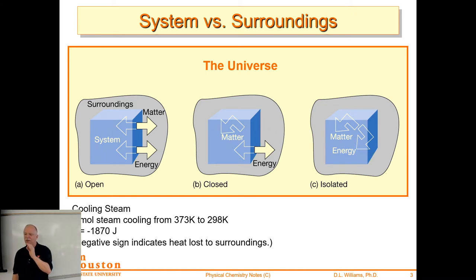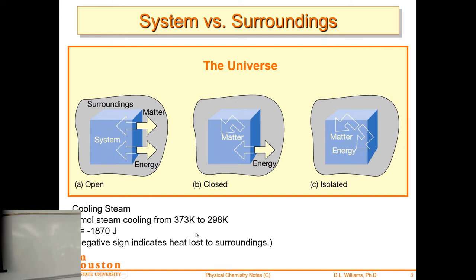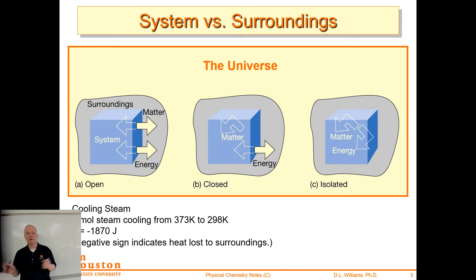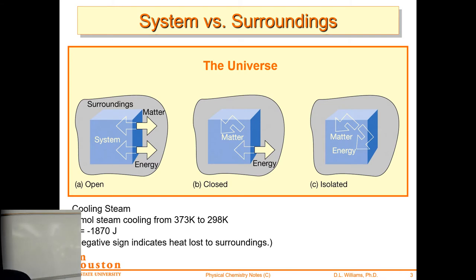One thing that's important to think about is the signs on energy. Defining the system is probably the most important thing to do in a thermodynamic arrangement. Whenever there's a negative sign, that means heat or energy has flowed out of the system. The negative sign indicates heat lost to the surroundings.